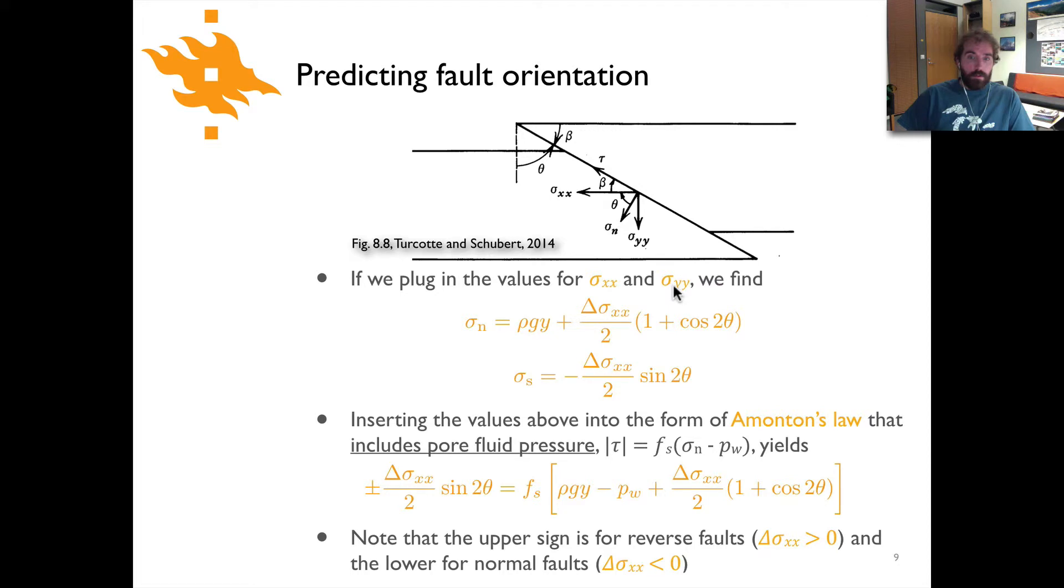Now if we plug in our values for sigma xx and sigma yy then we come up with something that looks like this for our normal and shear stresses and all that is just substituting in our assumed values for Anderson's law. And if we were to do the same thing here we've basically assumed there's no pore fluid pressure but if we did the same thing with assuming pore fluid pressure then we end up with something that looks like this where our shear stress over here on the left side there's our tau. So plus or minus delta sigma xx over two times the sine of two theta that's the shear stress is equal to fs times the normal stress minus the hydrostatic pressure.